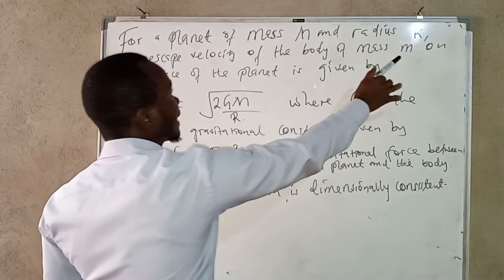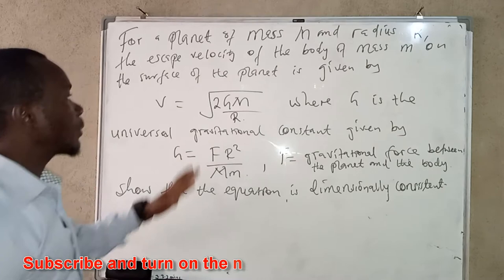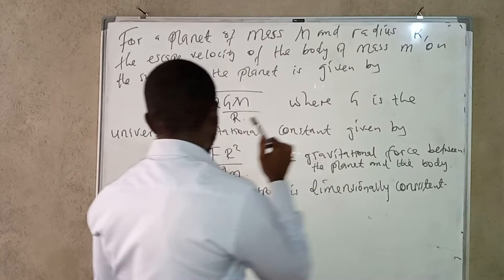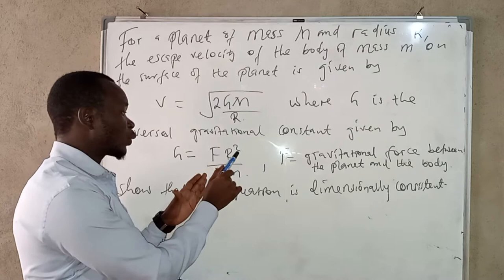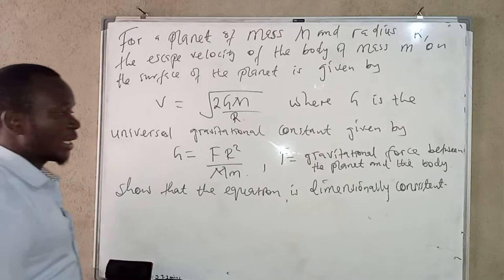In this video, we're going to look at this question: for a planet of mass M and radius r, the escape velocity of a body of mass m on the surface of the planet is given by v equals the square root of 2GM over r, where G is the universal gravitational constant given by G equals Fr² over Mm, and F is the gravitational force between the planet and the body, such that the equation is dimensionally consistent.